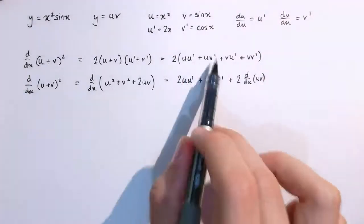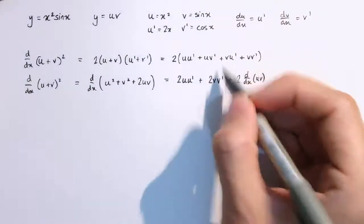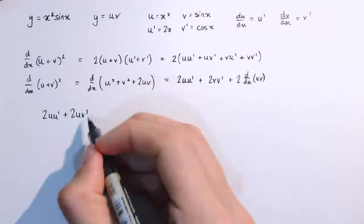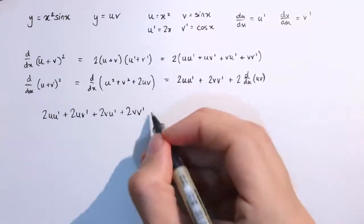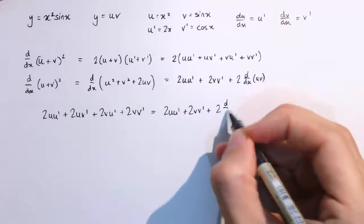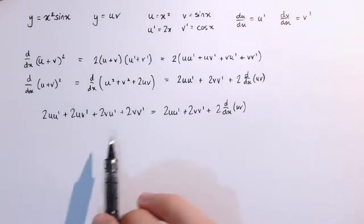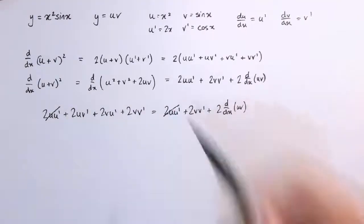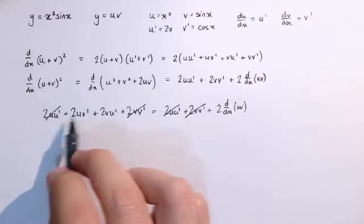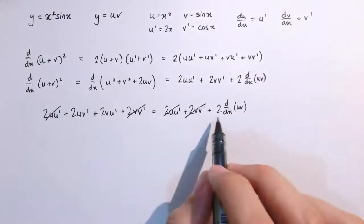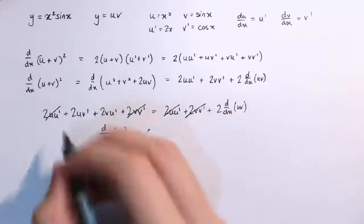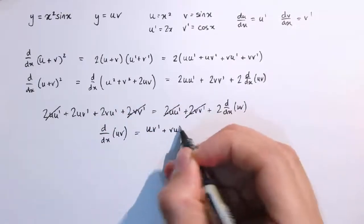These two expressions must be the same, so we set them equal. The 2u·u dashed term appears on both sides and cancels, as does the 2v·v dashed term. We're left with 2 times the derivative of u times v equals 2·u·v dashed plus 2·v·u dashed. Dividing through by 2 and switching sides of the equation gives us the result.